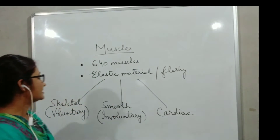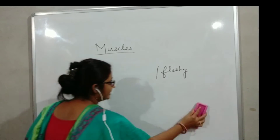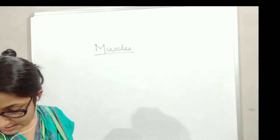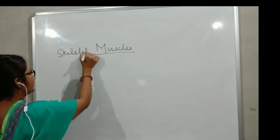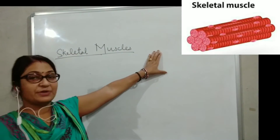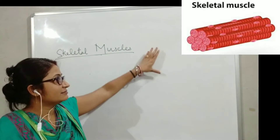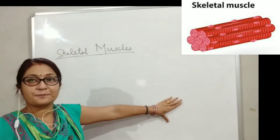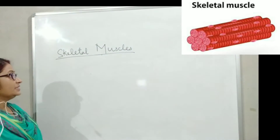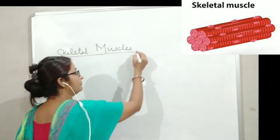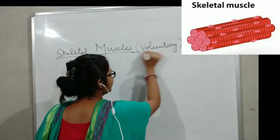Let's have a look first at the skeletal muscles. This is your skeletal muscle — you can see the picture here. These are what this kind of muscle looks like. Skeletal muscles — I have written one more name: voluntary.